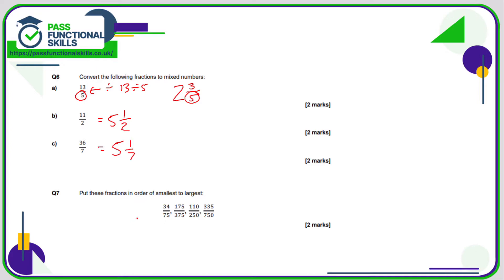Question seven: we need to put these fractions in order from smallest to largest. The issue is they all have different denominators, so we need to convert them into equivalent fractions with the same denominator. We look at the fraction with the biggest bottom number and check whether the others can go into 750. In this case, 75 definitely goes into 750. So 34 over 75 is the same as 340 over 750 — just multiply top and bottom by ten.